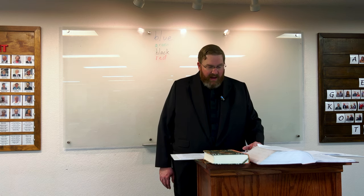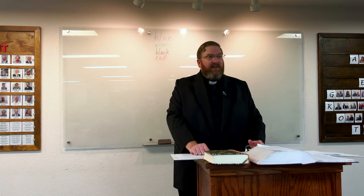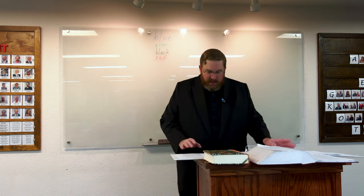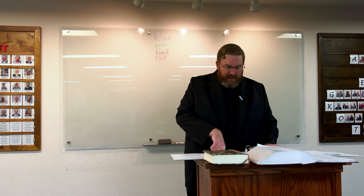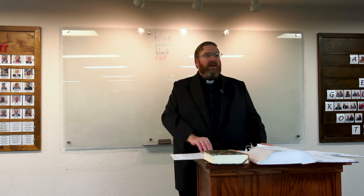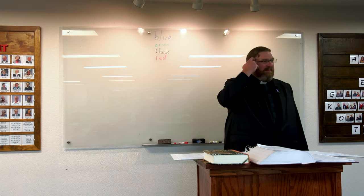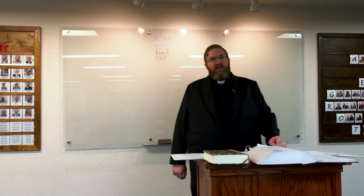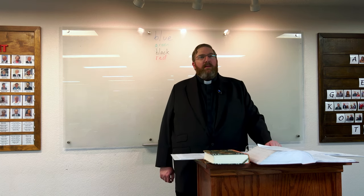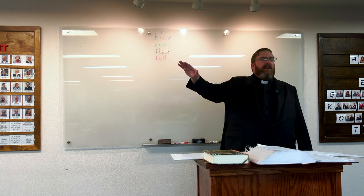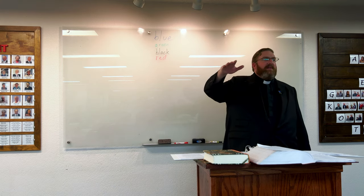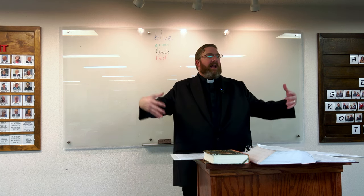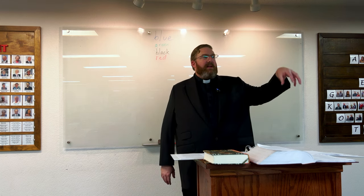So now we have living creatures — a very generic word — but then we're told specifically the livestock, the creeping things, the beasts of the earth according to their kinds. My guess would be that we moderns would probably call these mammals. That does seem to be the ordering of things where you've got fish, birds, the stuff that comes out of the waters, and now you have strictly land animals, specifically including livestock.